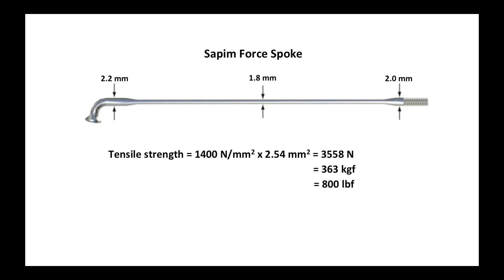This is a spoke I like to use sometimes, a SAPIM Force spoke, which is actually triple butted. You see that at the elbow it's 2.2mm thick, at the threaded end 2mm and 1.8mm in the middle, and you see the tensile strength figures below.